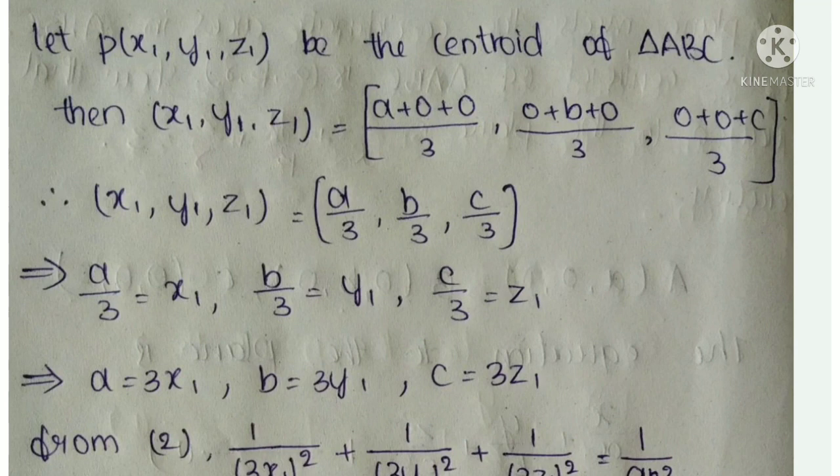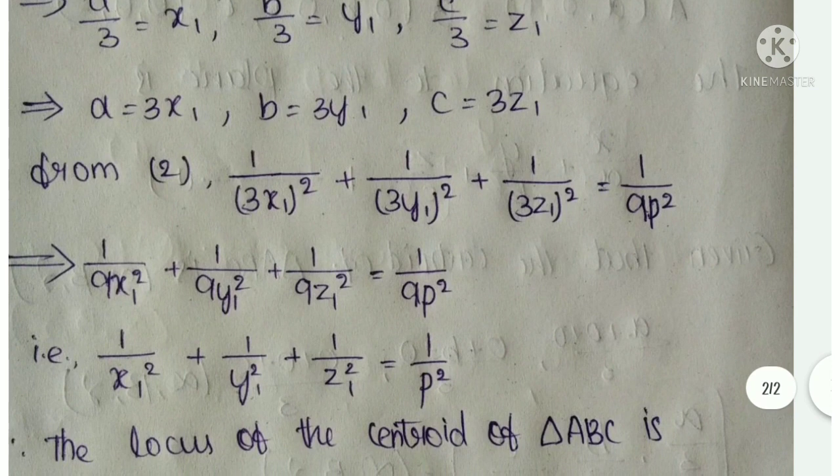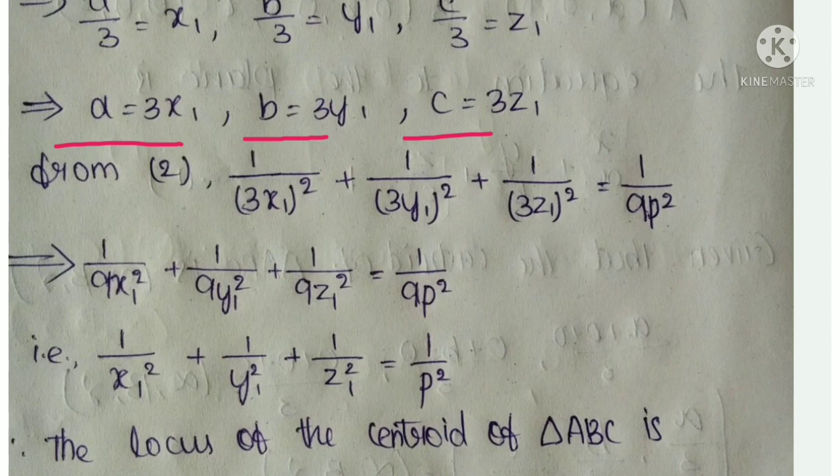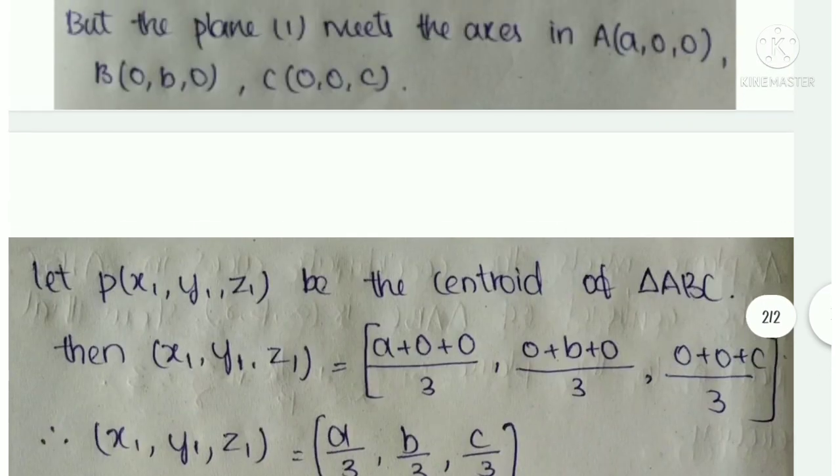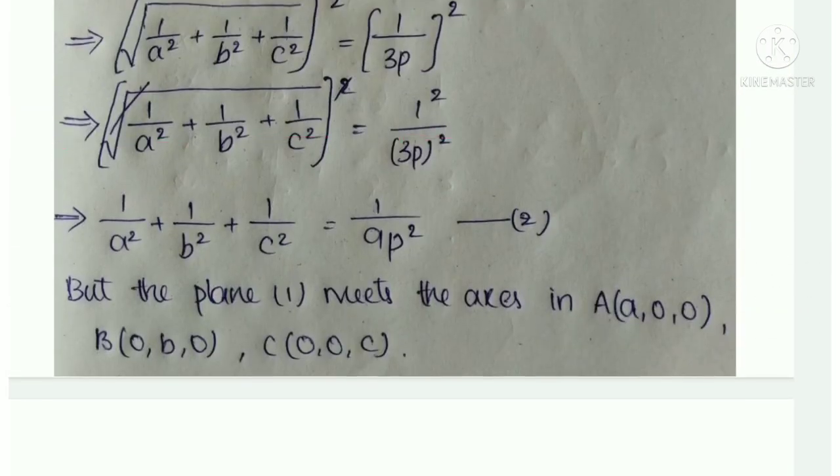From this we get: a/3 = x₁, b/3 = y₁, c/3 = z₁. Therefore: a = 3x₁, b = 3y₁, c = 3z₁. This is the same process as question number 9.